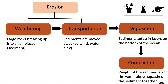The next process in forming sedimentary rocks is called compaction. This is when the weight of the sediments — those small pieces of rock — and the water above squashes the sediments together.